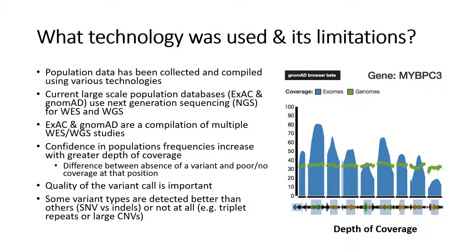Lastly, it is important to consider what technology was used to generate the population data and what its limitations are. Every technology has its benefits and limitations when it comes to identifying variants. Since most large-scale population databases currently available are compiled from Next Generation Sequencing, or NGS, that is what I will focus on. But if you are using other databases, consider what technologies were used and how that might impact what variants were or were not detected. The ExAC and gnomAD population databases from the Broad Institute are compiled from multiple different whole exome and whole genome studies, and with these types of studies there are several key things to keep in mind.